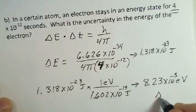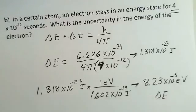That would be our uncertainty in the energy for this electron in that energy state that has a lifetime of 4 times 10 to the minus 12 seconds.